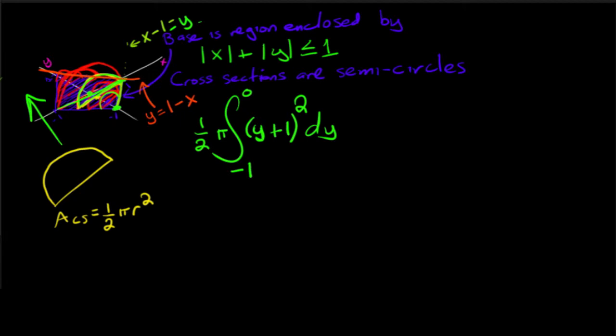And so then for that part, what I'm looking at is 1 half pi times the integral from 0 to 1 this time because I'm going from y equals 0 to y equals to 1. And then if I solve for x here, I would get 1 minus y for my radius and then, of course, squared with respect to y.